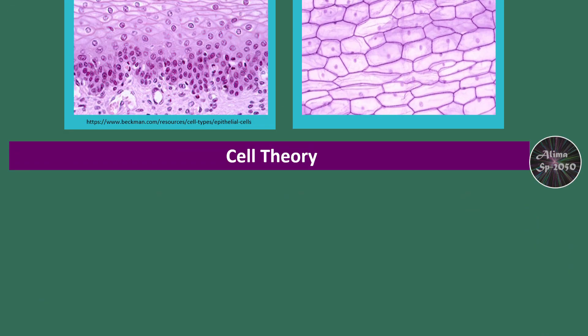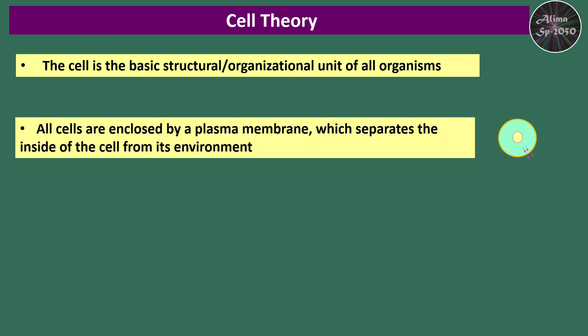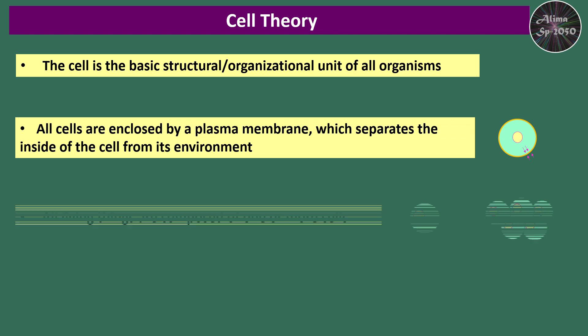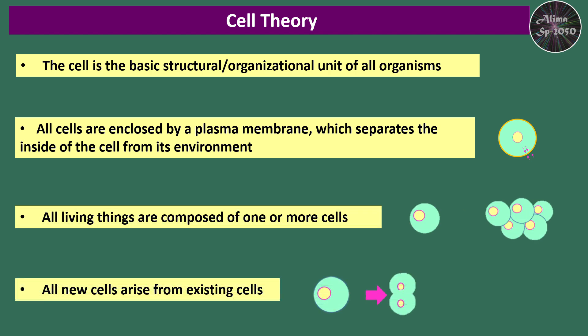Cell theory: The cell is the basic structural and organizational unit of all organisms. All cells are enclosed by a plasma membrane, which separates the inside of the cell from its environment. All living things are composed of one or more cells. All new cells arise from existing cells.